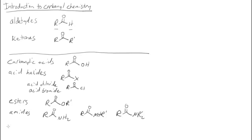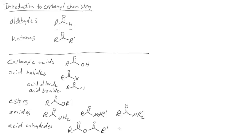And we can have acid anhydrides. Here we have our R and our carbonyl, then an oxygen, another carbonyl, and a second R group — so that's an anhydride.